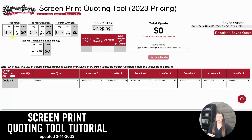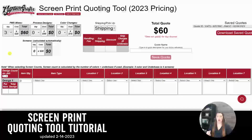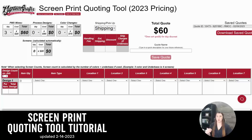Starting at the top, PMS mixes — we understand you have those customers that have to have that precise color. This is where you'd click however many PMS colors you have. We do charge PMS colors per order, not per location of print. So if it's a PMS color in the front and the back and it's the same color, it's just a one-time $20 charge — not $20 for the front and $20 for the back. So this is where you would go in and click how many PMS colors you'll have on that order.